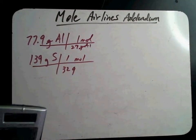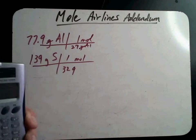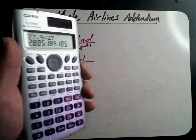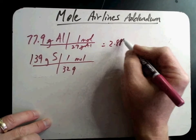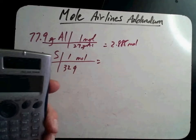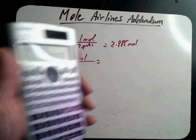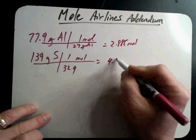And so I'm literally just going to do the math that we've always done. 77.9 divided by 27 is 2.885 moles. And 139 divided by 32 is 4.343, 4.343 moles.